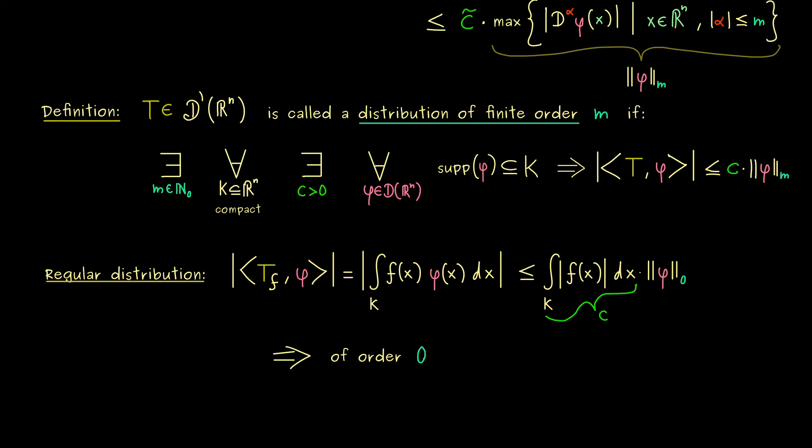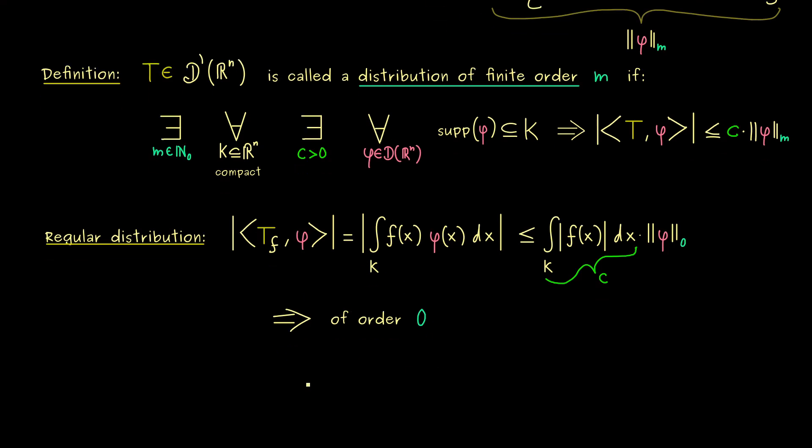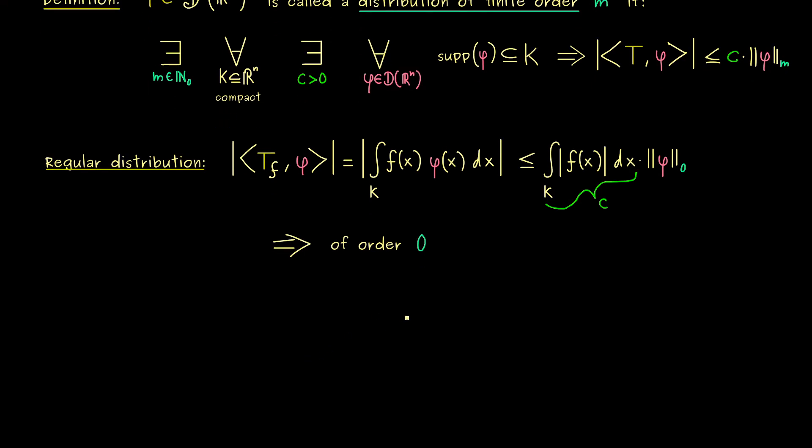However, it's not hard to show that also the delta distribution is of order zero. Okay, and now I can tell you that there is a very interesting fact for distributions of finite order equal to zero. And please don't forget, we already know they include very important distributions already.